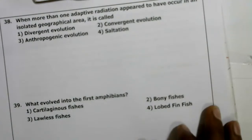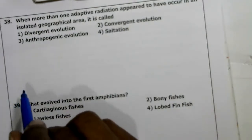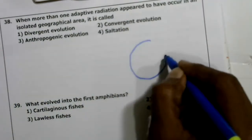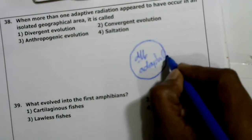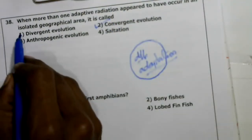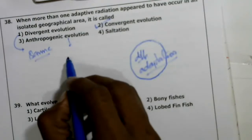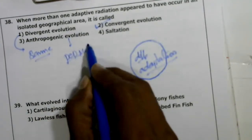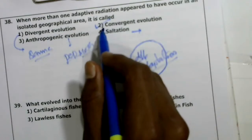Thirty-eighth question: when more than one adaptive radiation appears to have occurred in isolated geographical areas, it is called convergent evolution. In divergent evolution, the same adaptations appear. Sympatric evolution is different. Saltation is a single-step large mutation and not connected here. The second option — convergent evolution — is correct.